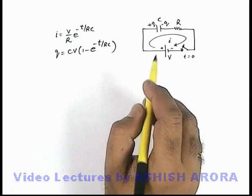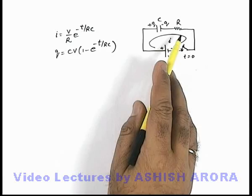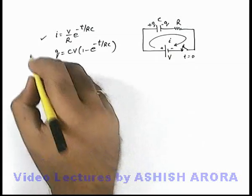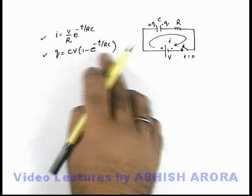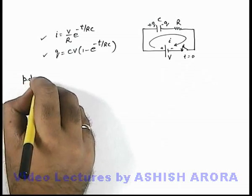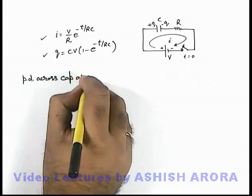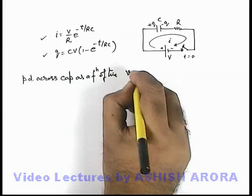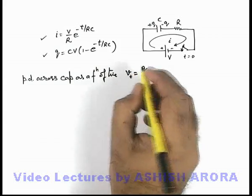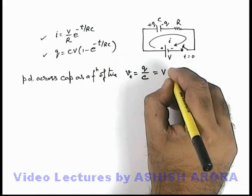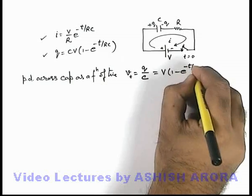As we have calculated, in charging of a capacitor through a resistance in a given RC circuit across a DC voltage source, the charging current is I = (V/R)e^(-t/RC) and the charge on the capacitor as a function of time is Q = CV(1 - e^(-t/RC)). Using these values we can find various parameters of the circuit. The potential difference across the capacitor as a function of time is Q/C, which gives V_C = V(1 - e^(-t/RC)).